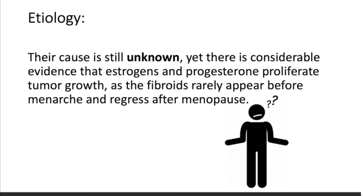What causes uterine fibroid? It is still unknown. However, there is considerable evidence that estrogen and progesterone hormones, which are the female hormones, can increase the tumor growth rate. This is supported by the fact that fibroids rarely appear before menarche and regress after menopause.